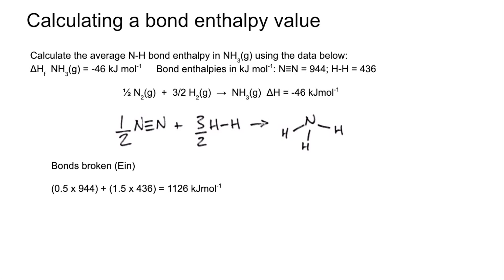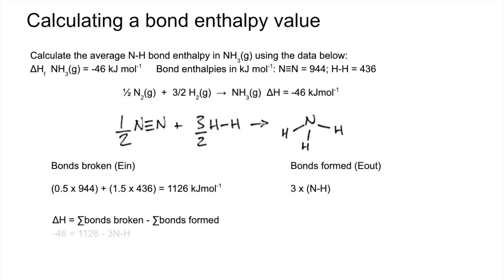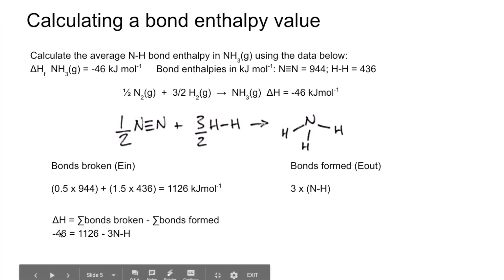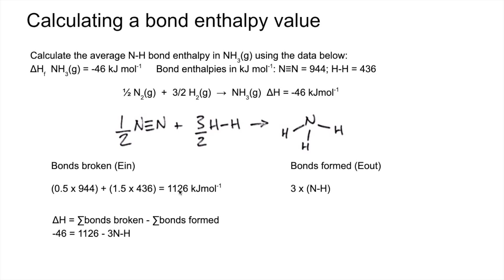That gives us a total E in of 1126 kilojoules per mole. The energy out — E out — is the energy from the formation of 3 N-H bonds, which is our unknown. Applying delta H equals E in minus E out: minus 46 equals 1126 minus 3 N-H. Rearranging, 3 N-H equals 1126 plus 46, which is 1172. Dividing by 3 gives us 391 kilojoules per mole for the N-H bond.